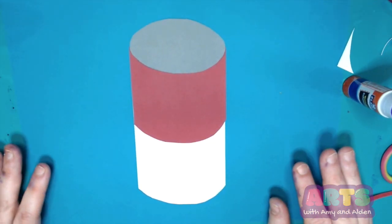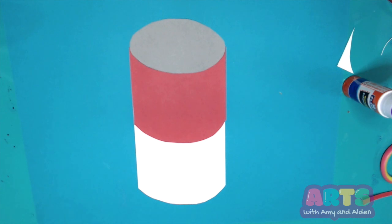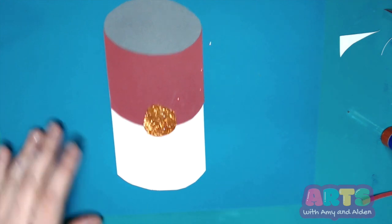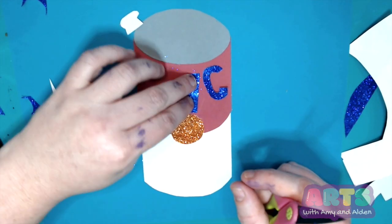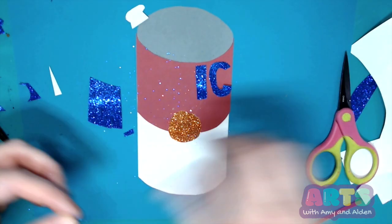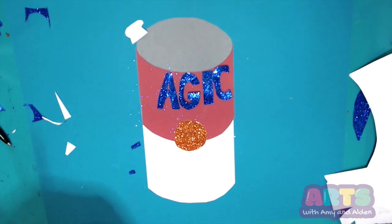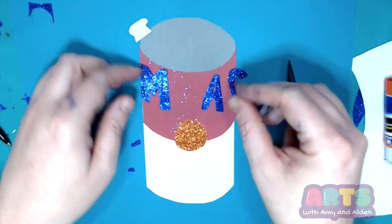going to be decorating with some glittery paper. The traditional can of Campbell's soup has a circle in the middle, and then it has words at the top and words at the